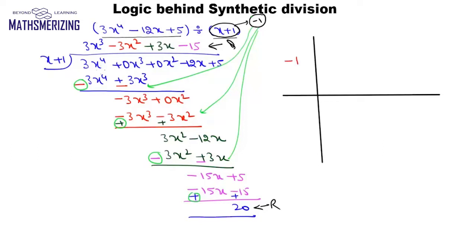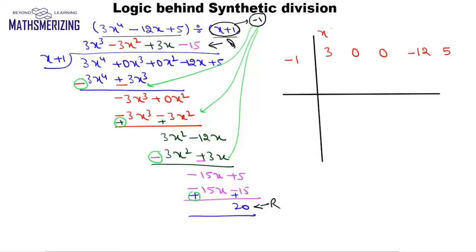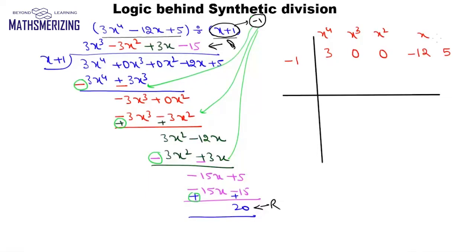Now I will write the coefficients of the polynomial, which are 3, 0, 0, minus 12, and 5. These coefficients correspond to the coefficients of x to the power 4, x³, x², x, and the constant term respectively.